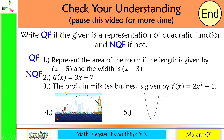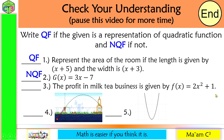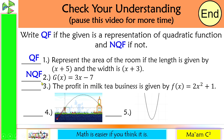Number three: the profit in a milk tea business is given by f of x equals 2x squared plus 1. We have the dependent variable, equal sign, and independent variable raised to the second power — so yes, this is a quadratic function.